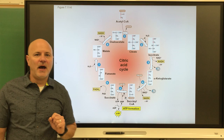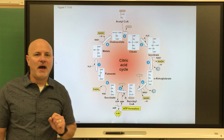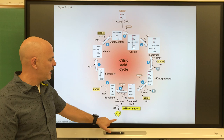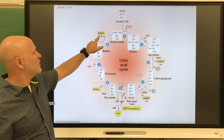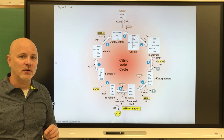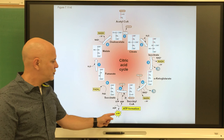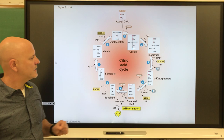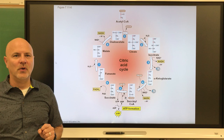Everything occurs twice because we had two acetyl CoAs from the transition reaction. The net result: two ATP, six NADHs — electron carriers, energy carriers — and two FADH2, which is another electron carrier similar to NADH. We also get four carbon dioxides. So glucose had six carbons: we lost two in the transition reaction and four in the Krebs cycle — the glucose is completely broken down, with energy captured as ATP, NADH, and FADH2.